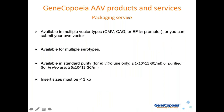At GeneCopia, we have a packaging service for AAV just like we do with lentivirus. These are available in multiple vector types using CMV, CAG, or EF1-alpha promoters, or you can submit your own vector to us. They are available in multiple serotypes, which is important for tissue specificity. Our particles are available in standard purity — primarily for in vitro use only at high titers greater than 10 to the 11th genome copies per milliliter — or purified, which is required for in vivo use and provides even higher titers. Insert sizes should be less than or equal to 3 KB in length.